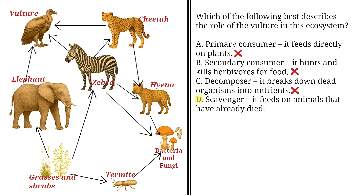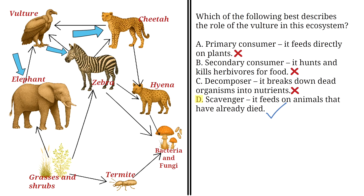D: Scavenger — it feeds on animals that have already died. This is the correct answer. From the diagram, the elephant, zebra, and cheetah are all bigger and stronger than the vulture, so the vulture can only feed on them after they have already died. So D is our answer.